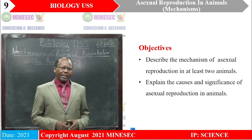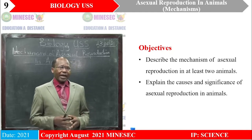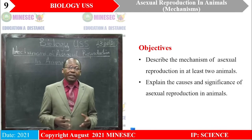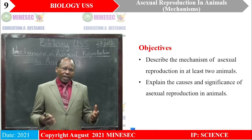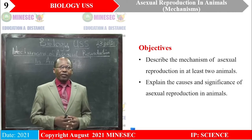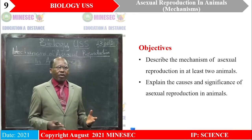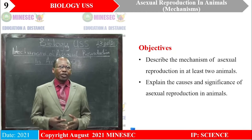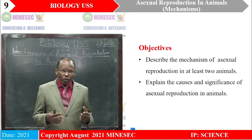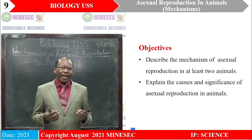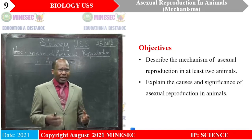With this assignment already done, giving us a clue to our mechanisms, what are the objectives we shall try to achieve by the end of this lesson? We should be able to describe the mechanisms of asexual reproduction in at least two animals, and we should also be able to explain the causes and significance of asexual reproduction in animals.